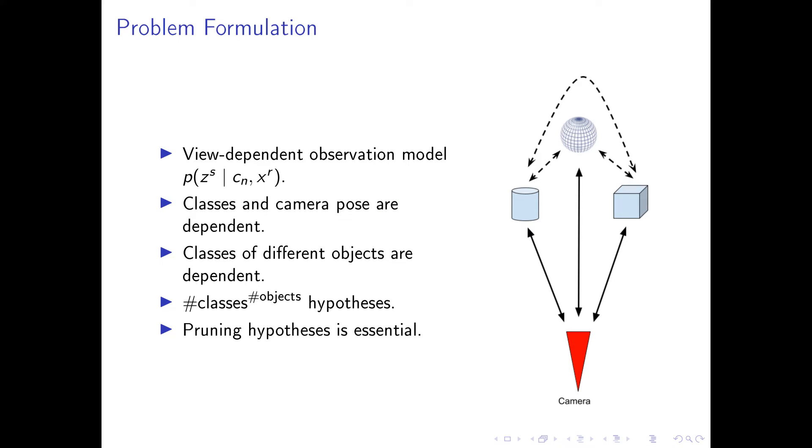If we consider a viewpoint-dependent semantic observation model, then for a semantic observation Zs, we have a model P given object class CM and relative position XR.